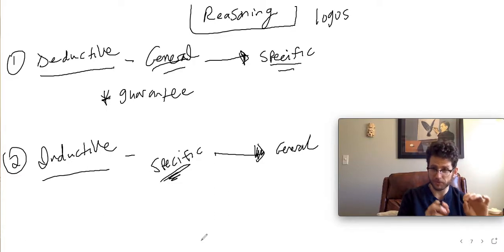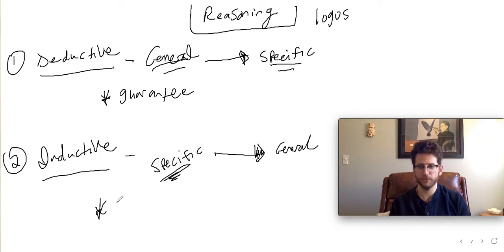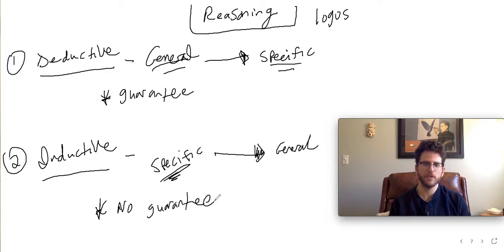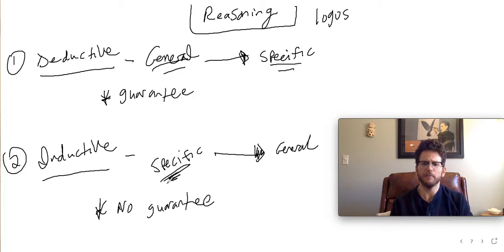I start with those specific examples and hope to arrive at a general conclusion. Unlike the deductive argument, with inductive arguments there's no guarantee. The best we can do with inductive arguments is that they're really solid with lots of specific cases, but we can never guarantee a conclusion.